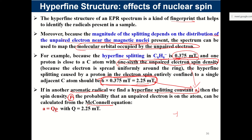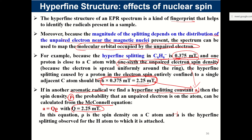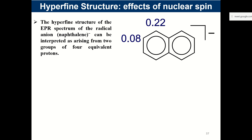When the electron is delocalized over six carbons, the spin density is 1/6, so you get 1/6 × Q = 0.375 mT as the observed hyperfine splitting constant for each hydrogen. This kind of consideration helps us understand the electron distribution profile in a radical.